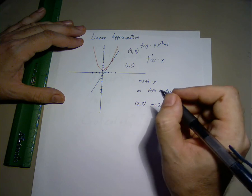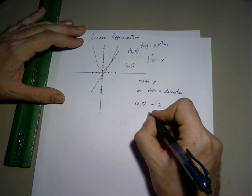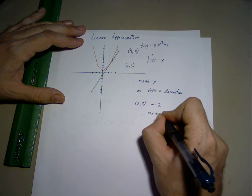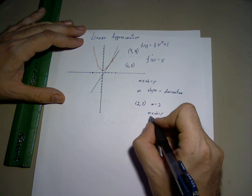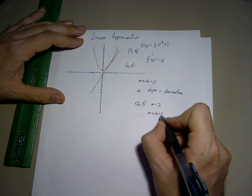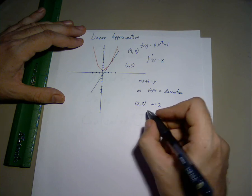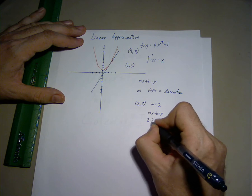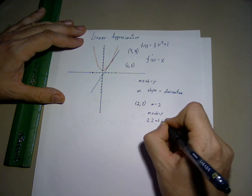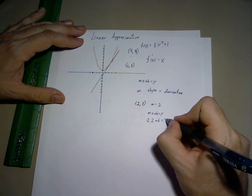To find the tangent line, we set up the equation mx plus b equals y. We place in our values of mx and y. So 2 is our slope. At our point, 2 times 2 plus b equals 3.